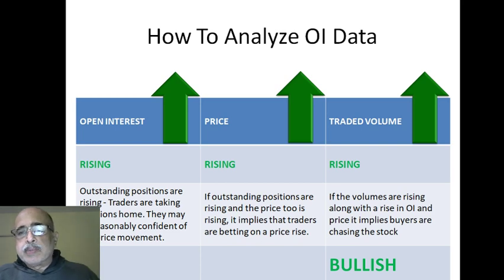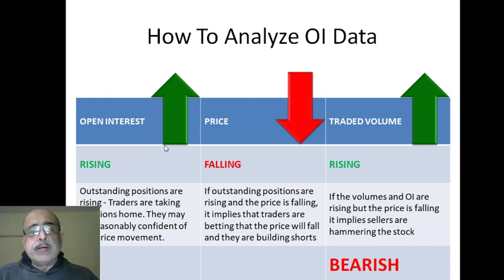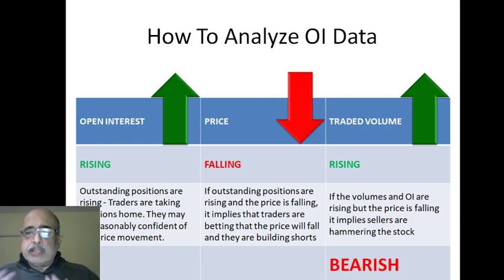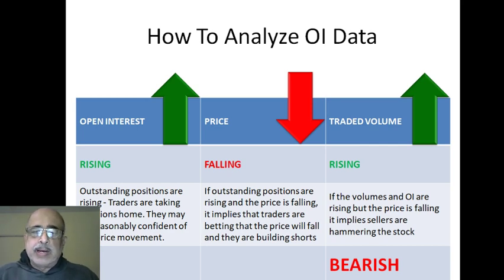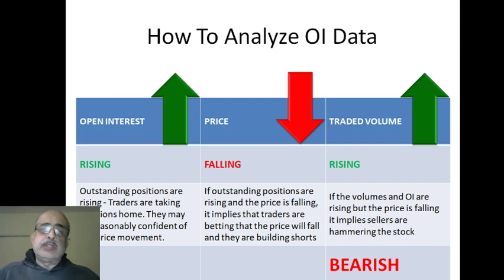The second interpretation is when open interest is rising and the price is falling and volume is going up. That means traders are taking on short positions — the OI is going up because shorts are increasing. Volume going up means more and more sellers are in the market. The price is coming down because sellers are selling out. So when open interest rises, price falls, and traded volume goes up, the outlook is bearish.